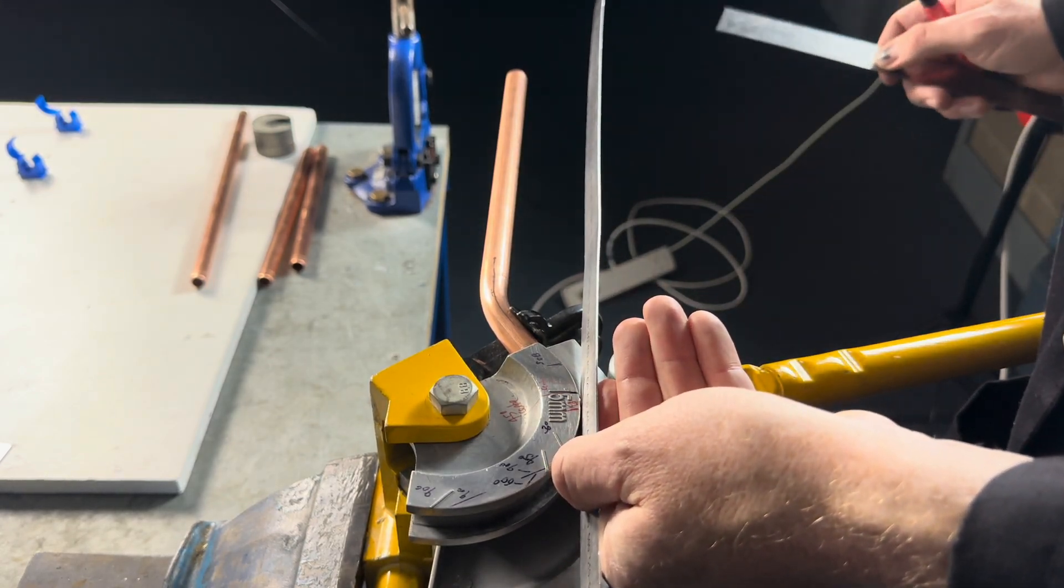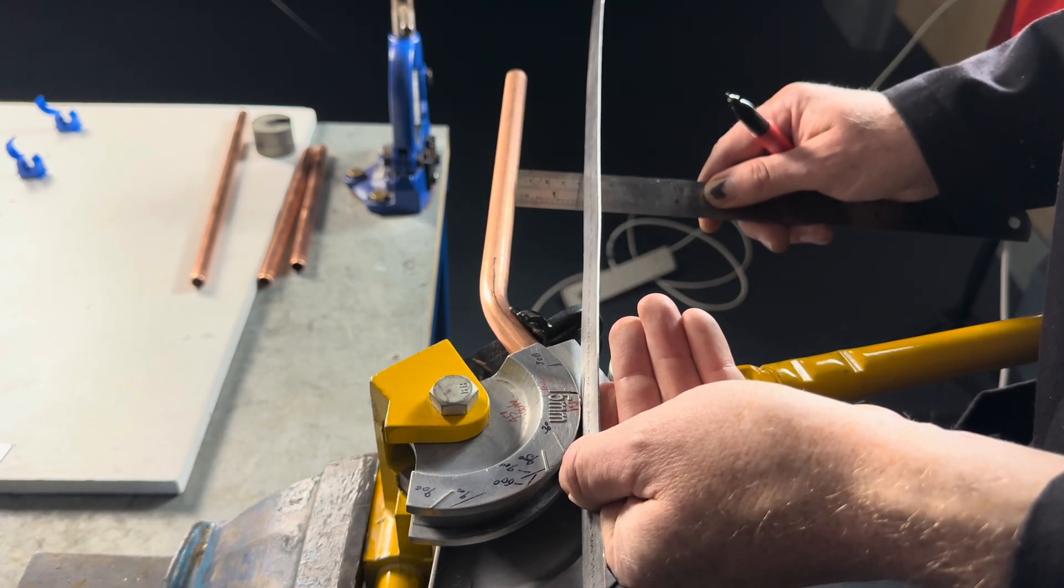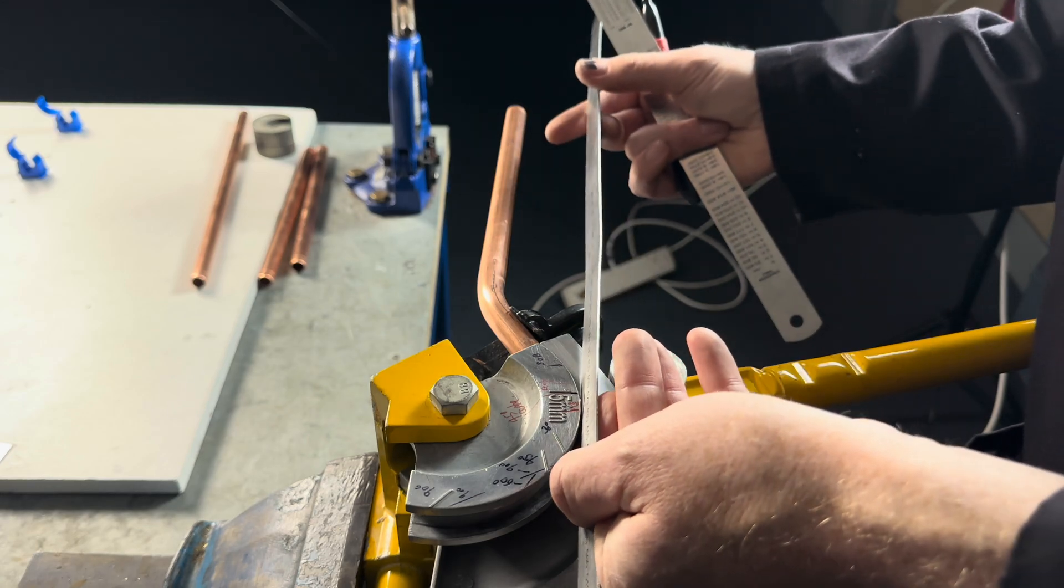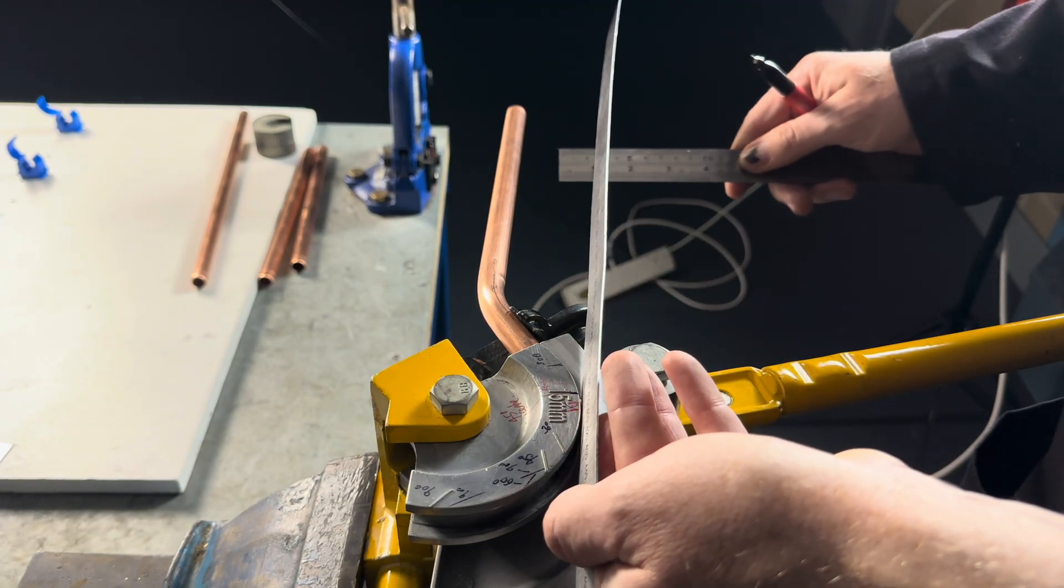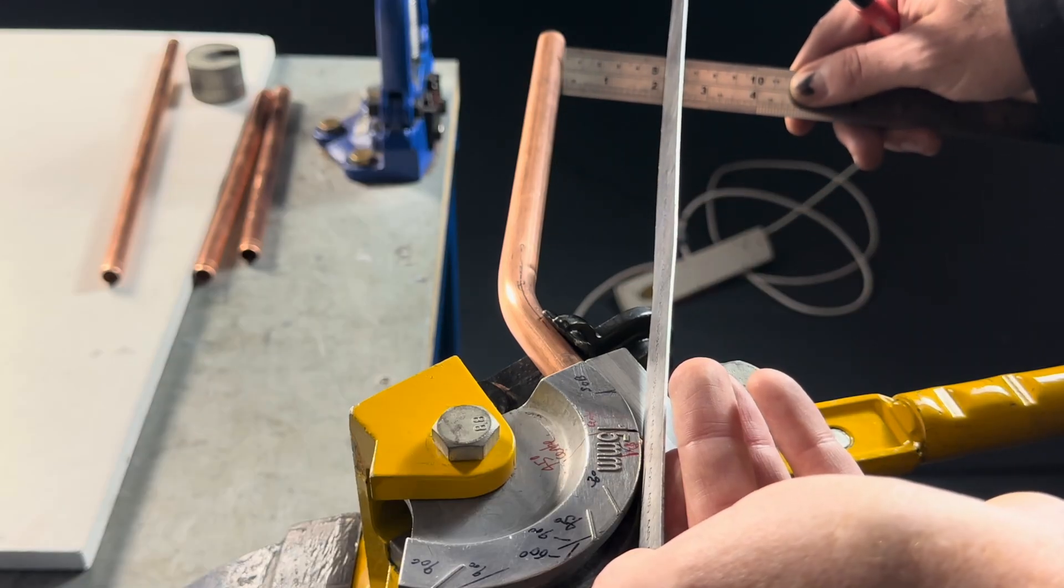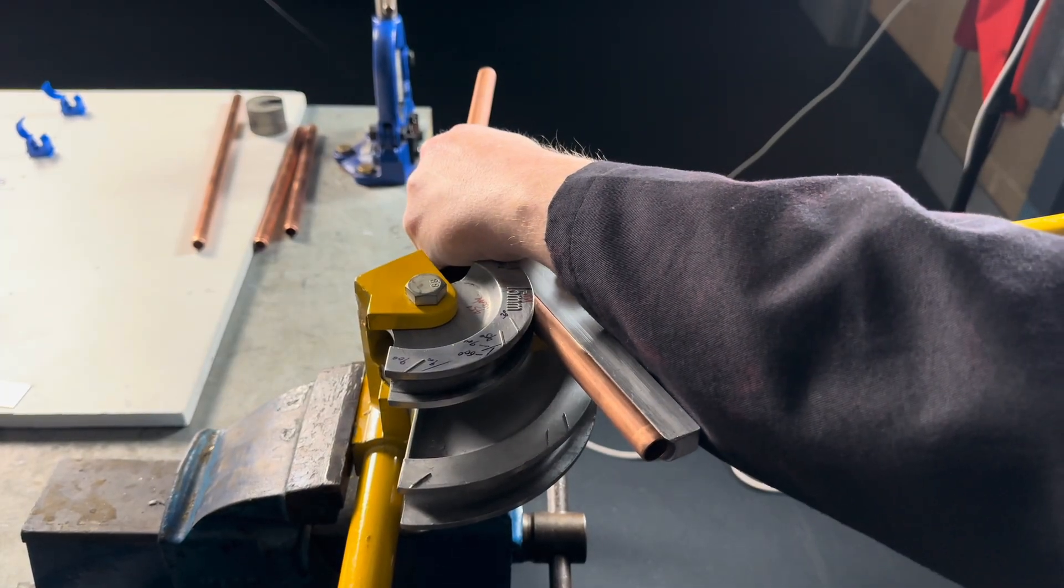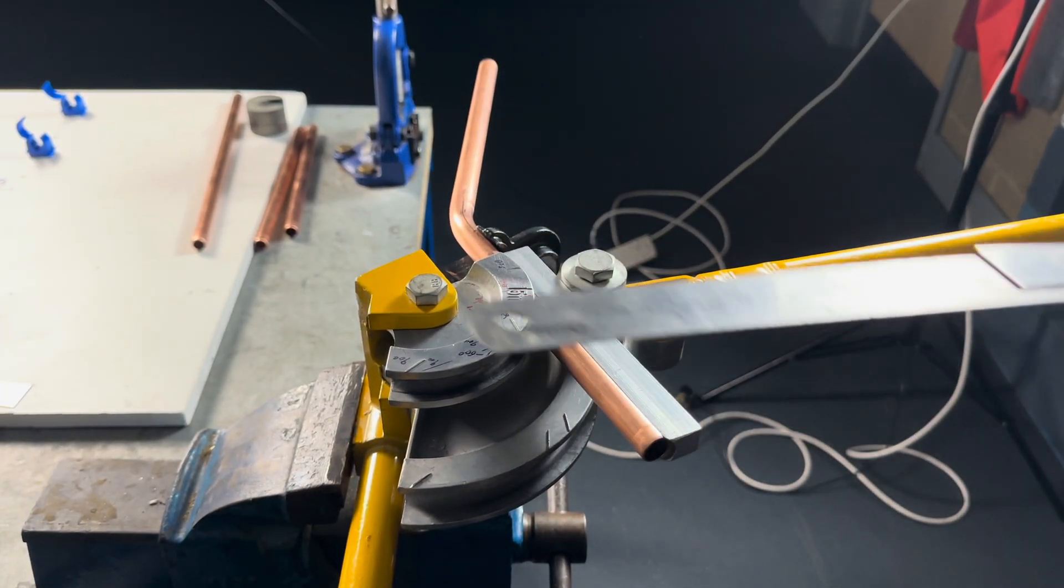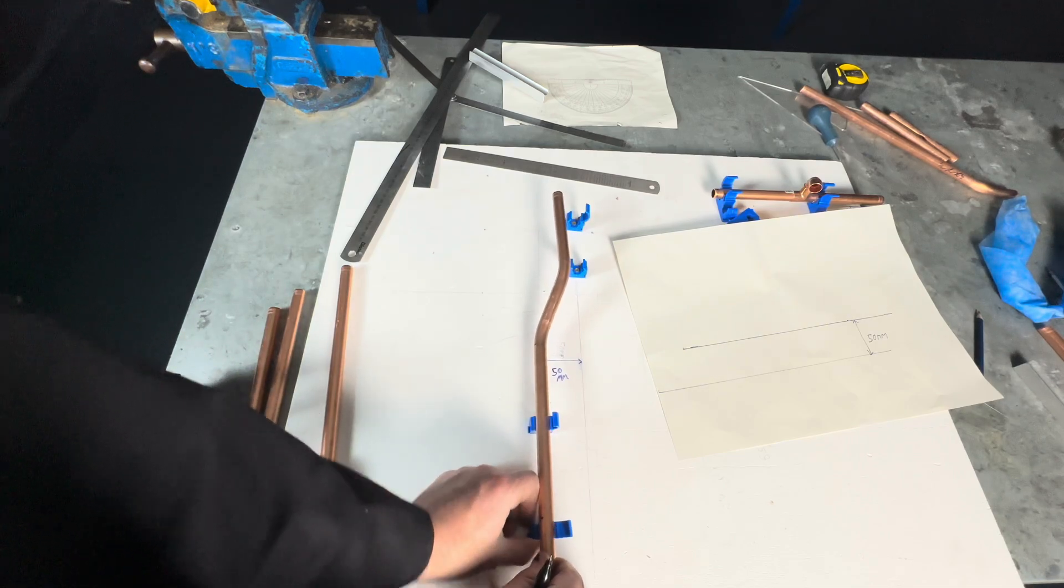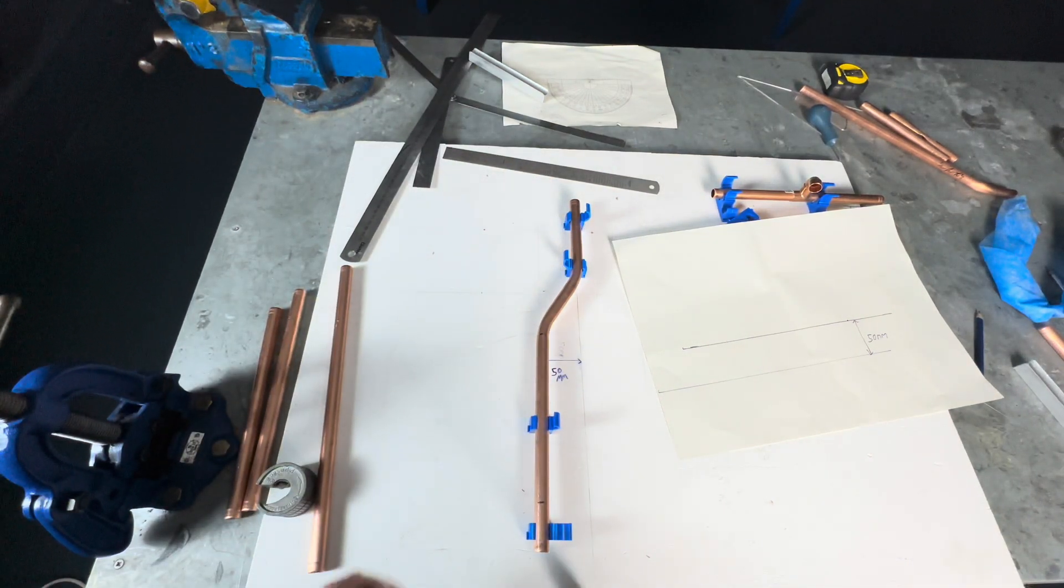Do it again, ruler parallel. I'd say that's about 50 mm. Then make sure the pipe is straight. And we then bend it back 30 degrees.